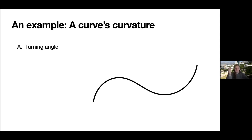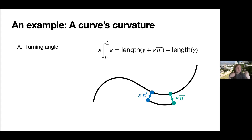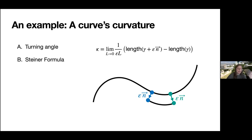Let's come up with more definitions. We can take a section of the curve and offset it in the normal direction by some epsilon. The length of the offset section is actually larger than the length of the original section. If we measure the difference between these two lengths, it is also related to curvature — this is known as Steiner's formula. We can undo the integral, take a limit as L approaches zero, and get another definition of curvature: the Steiner formula curvature.